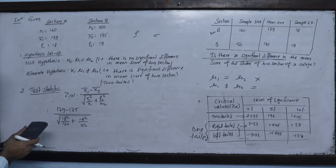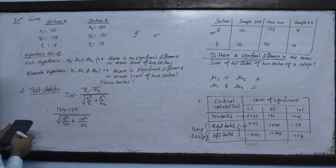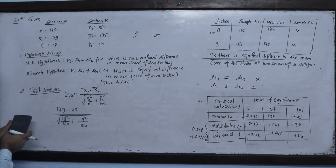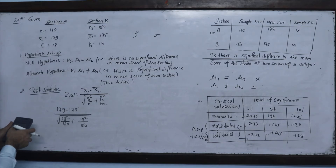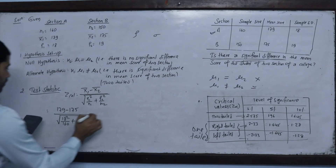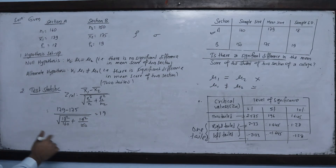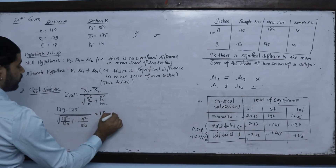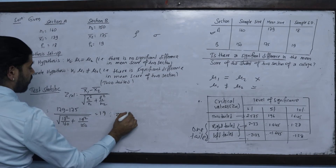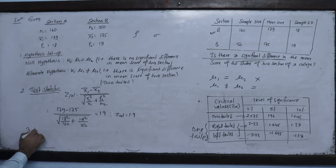Continuing the calculation: plus 19 squared divided by 150, all under the square root. The numerator is 179 minus 175, which equals 4. Dividing, we get a z-calculated value of approximately 1.9.